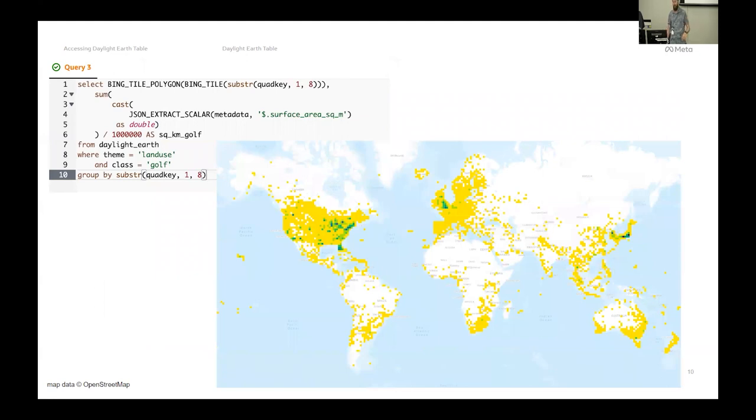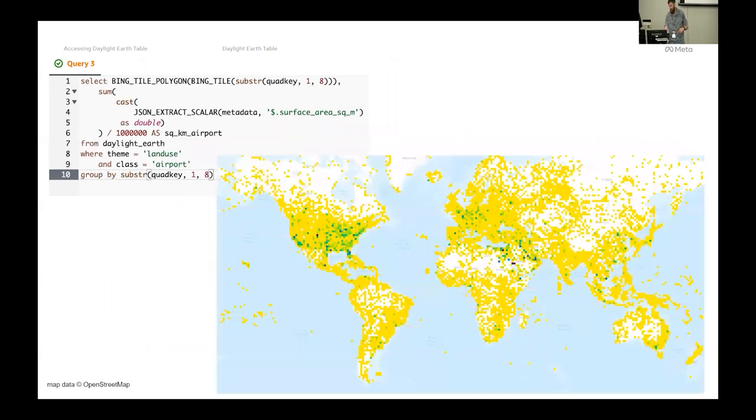And you can do some really quick analysis with the quad keys, which is really nice. So using quad keys, this is surface area of golf courses around the world. It's kind of fun. I didn't know there were so many golf courses. I learned that this morning.